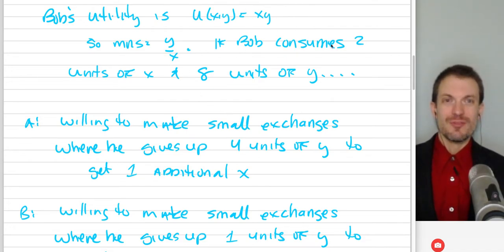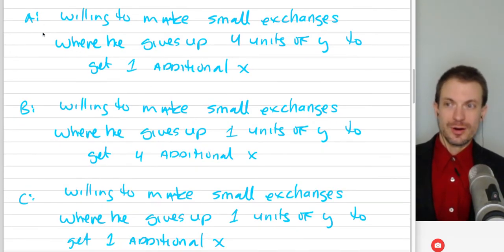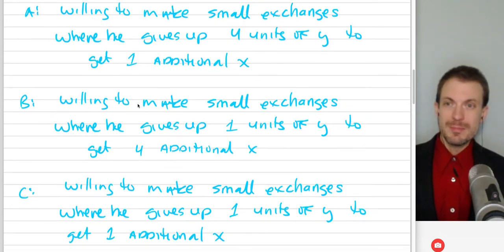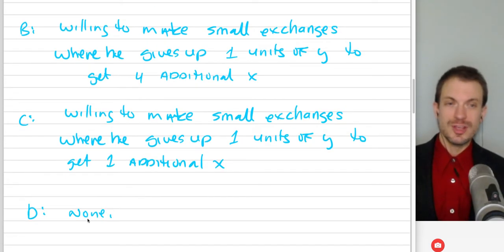If Bob consumes 2 units of X and 8 units of Y, then here was the question. Multiple choice: A, Bob is willing to make small exchanges where he gives up 4 units of Y to get 1 additional unit of X. B, Bob is willing to make small exchanges where he gives up 1 unit of Y to get 4 additional X. C, Bob is willing to make small exchanges where he gives up 1 unit of Y for an additional X, or D, None.